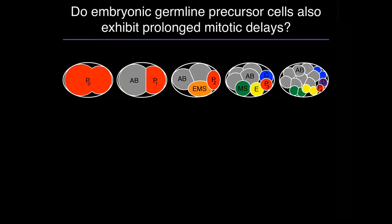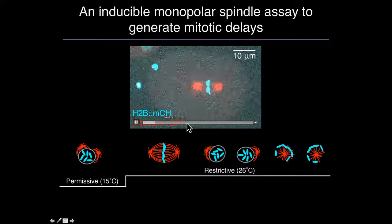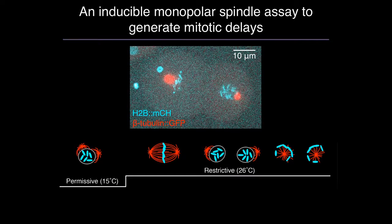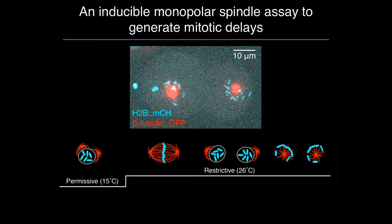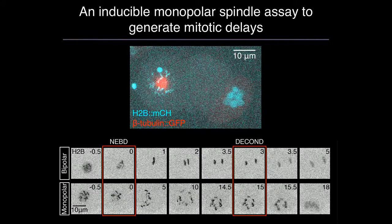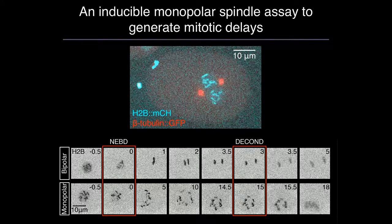We went back into the embryo to ask whether the embryonic precursors of the GSPCs — the P lineage blastomeres — also show prolonged mitotic delays. We needed a way to generate spindle defects in different embryonic lineages and at different embryonic stages. To do this, we used a fast-acting temperature-sensitive allele of ZYG1, which is required for centrosome duplication. Cells that have already duplicated their centrosomes will enter a normal bipolar division; centrosome duplication will then fail and cells will enter mitosis with a single spindle pole, forming monopolar spindles. Cells with a single spindle pole will delay in mitosis, presumably because they fail to satisfy the checkpoint. We score mitotic timing as the time between nuclear envelope breakdown and the start of chromosome decondensation.